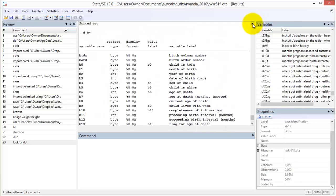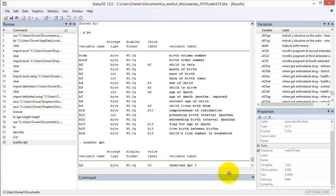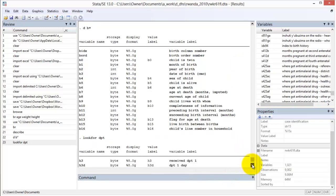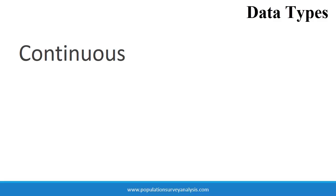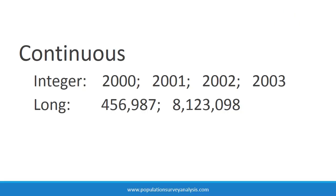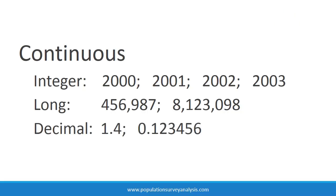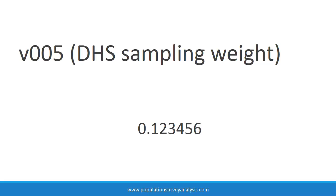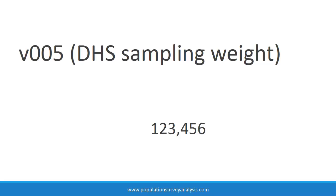The output of the lookfor function gives similar information as describe, including the variable storage type. Continuous variables include integer whole number values like years, long number values, and decimal values. Due to idiosyncrasies with storing decimal values in computers, the Demographic and Health Surveys only store integer values by multiplying decimal values by a factor of ten. For example, the sample weight variable V005 has six decimal places, so DHS multiplies it by one million to store it as an integer.